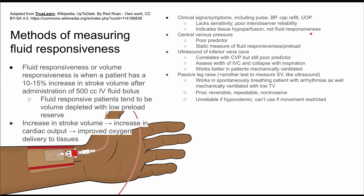Another way to measure fluid responsiveness is with the central venous pressure. This is also a poor predictor — it is a static measure of preload as opposed to a dynamic measure. A somewhat better method is ultrasound of the inferior vena cava (IVC), which correlates with CVP but is still a poor predictor. You can assess the width of the IVC under ultrasound and watch it collapse with inspiration. This works better in mechanically ventilated patients who aren't breathing spontaneously.